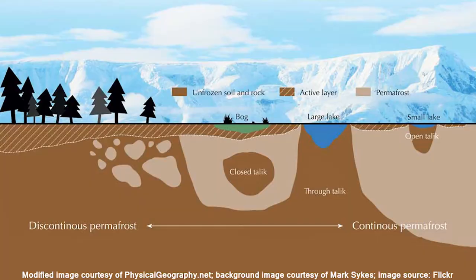These large areas can be dotted with something called taliks. Taliks are unfrozen layers of ground found underneath lakes or rivers. The layer stays unfrozen because some of the water over it does not freeze during the winter, and the presence of liquid water prevents the formation of permafrost. Sometimes it can even destroy it.